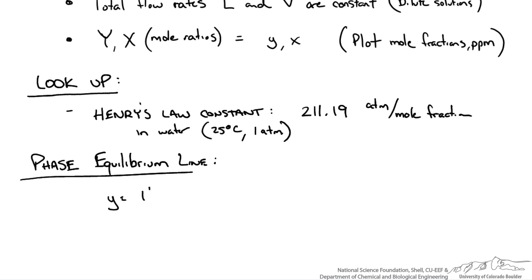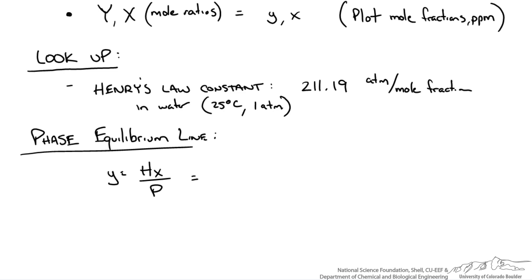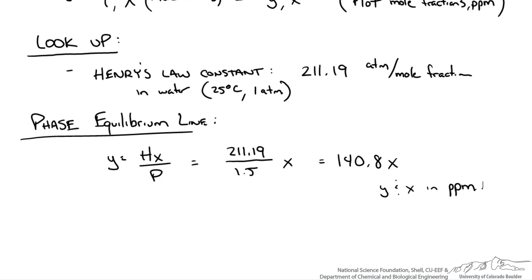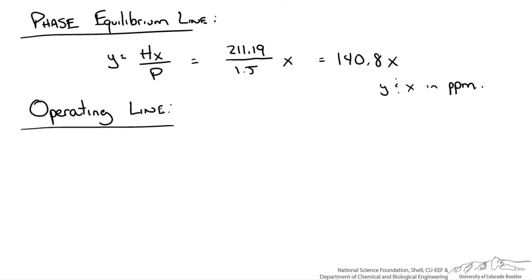So using Henry's law we can figure out what our phase equilibrium line is going to look like. In this problem we have looked up Henry's constant and we know the pressure that our absorber is going to operate at. So we can get a relationship between y and x. You can see this is a straight line with a slope of 140.8 that goes through the origin. So we can plot this on a y versus x plot along with our operating lines. For our operating line we want to work in the appropriate region of our concentrations. So to determine the extent at which our phase equilibrium line extends, we could take the concentration that we start with, the 200 parts per million, and divide it by our phase equilibrium slope, and we get the concentration in the liquid phase at equilibrium.